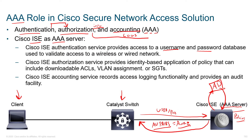The Cisco ISE authorization service provides an identity-based application of policy. We set up rules for what you're allowed to do based on who you are, time of day, and we can consider things like security posture — are you patched and up-to-date? All of this is brought into consideration before we decide what access list gets applied, what VLAN we assign you to, or if we're going to leverage security group tags for TrustSec. Cisco's ISE accounting service gives us records of what's happened: who connected, how long were they logged in, how many bytes did they download.